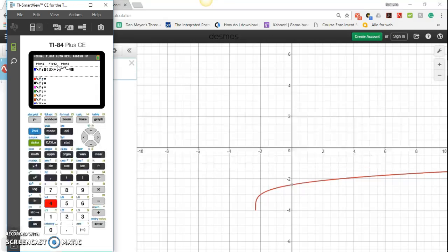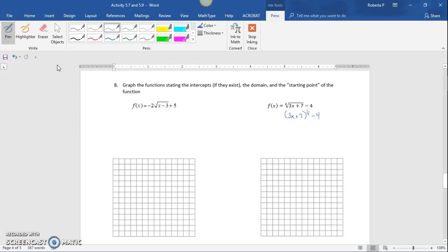Now that we have the function entered into our calculator, we want to find the starting point, which will determine our domain and range. Since 3x plus 7 has to be a positive value—because we can't take the fourth root of a negative number—we know that 3x plus 7 must be positive.